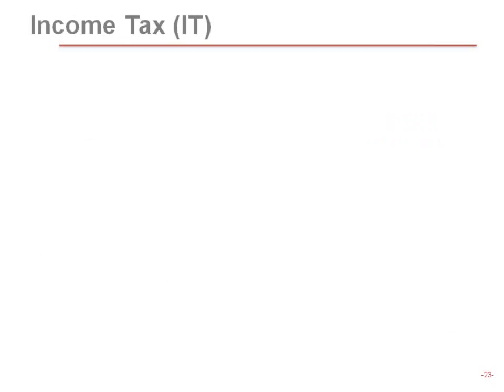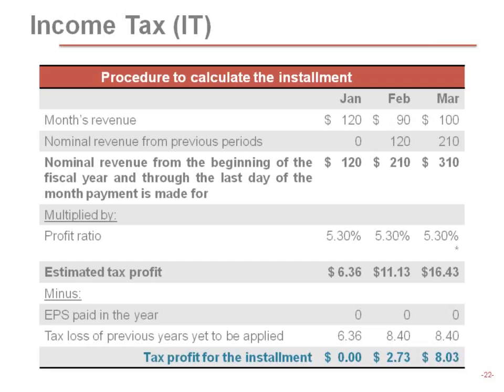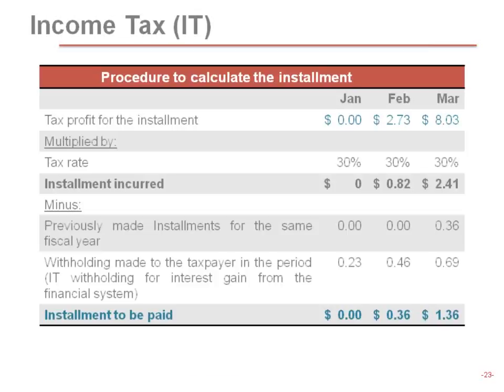For March, cumulative revenue of 310 times the 5.30% ratio gives 16.43. Minus the 8.40 tax loss gives 8.03 times 30% equals 2.41. Minus the 0.36 paid in February and minus any withholdings to date would give a net to pay of 1.36. Not very complicated.